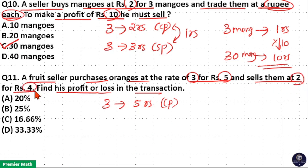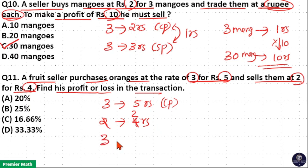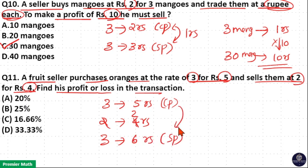He sells 2 mangoes at 4 rupees, which means 1 mango he sells at 2 rupees. So 3 mangoes he sells at 3 into 2, which is 6 rupees. This is the sell price. The difference between cost price and sell price is 1 rupee.